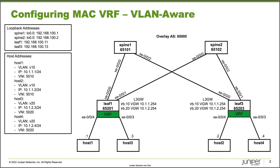We are using ERB, or edge routed bridging. We're going to configure MAC VRF with the VLAN-aware service type. Host 1 and host 2 belong to VLAN v10 with VLAN ID 10, subnet 10.1.1.0/24, and VNI 5010. Host 1 has .1 and host 2 has .2. Host 3 and host 4 use VLAN v20 with VLAN ID 20, subnet 10.1.2.0/24, and VNI 5020.